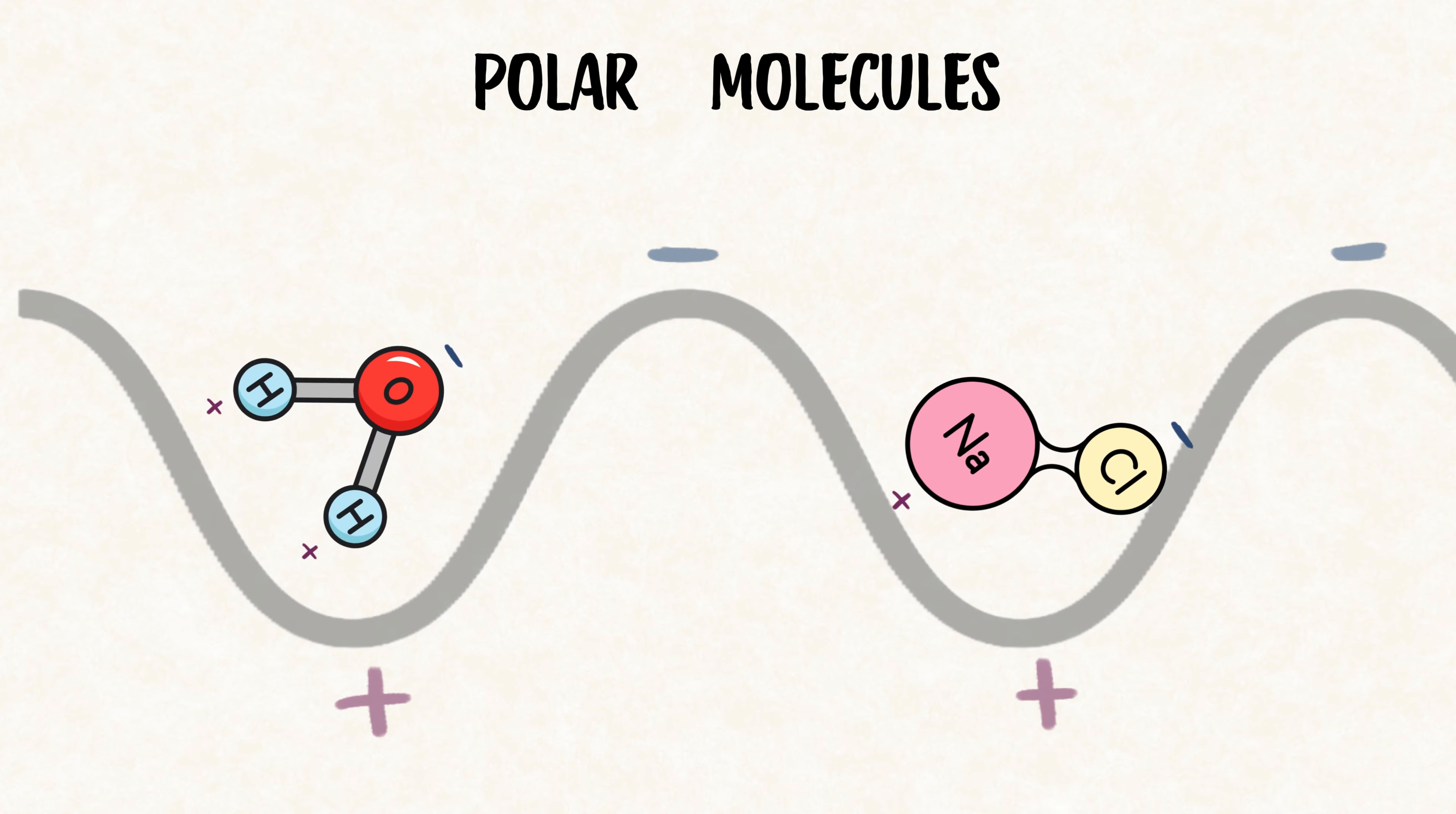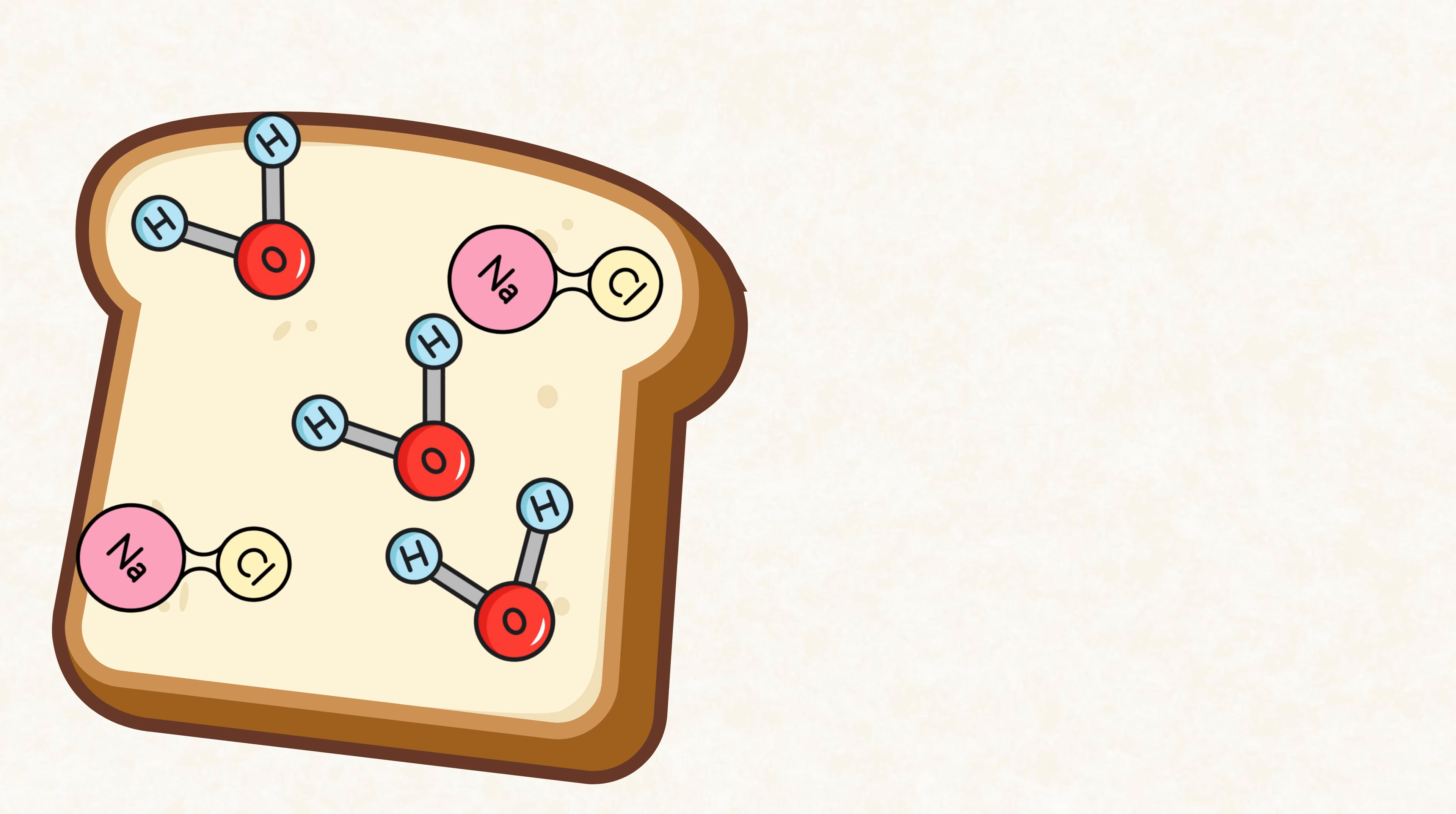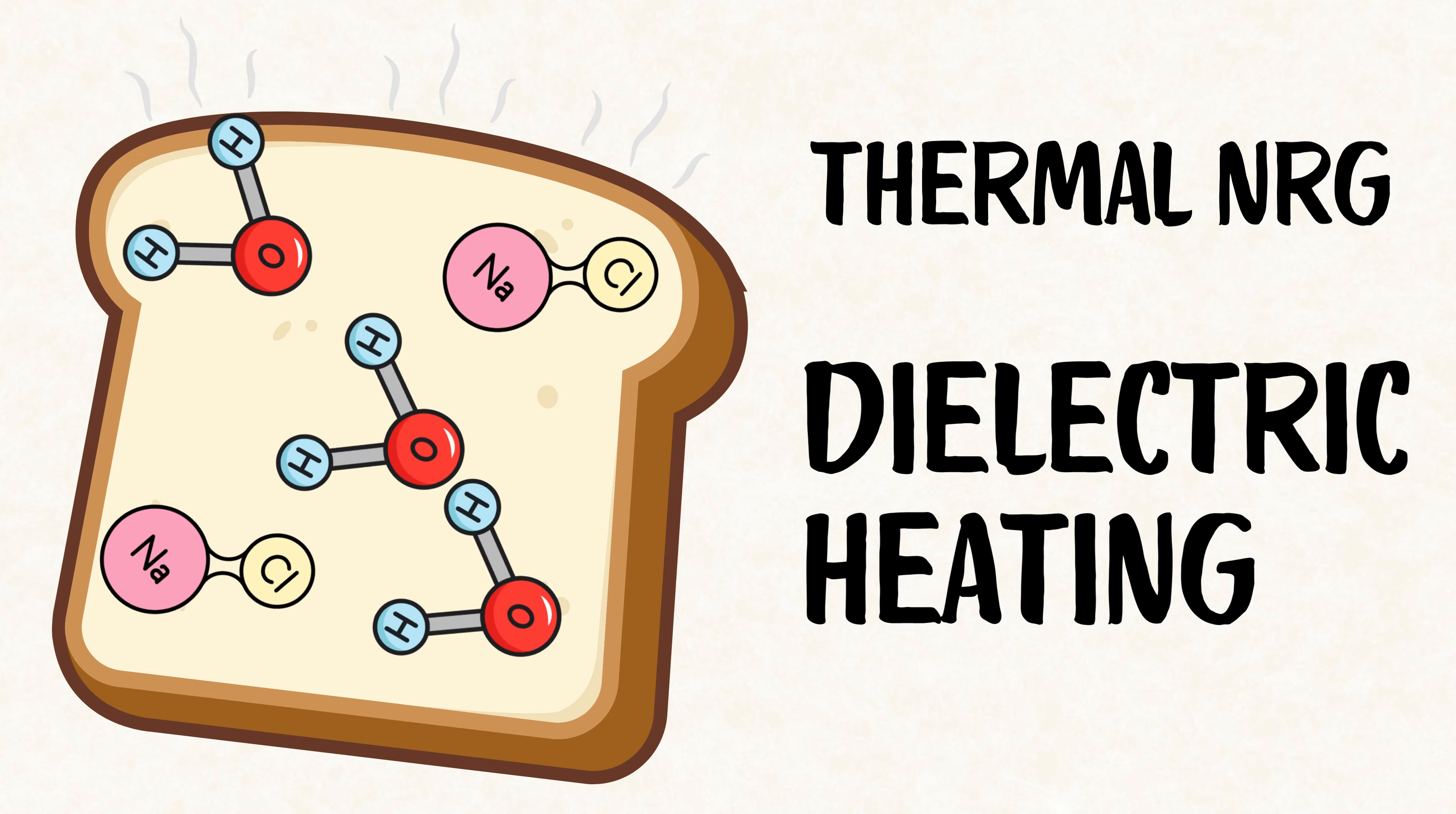They constantly align themselves with the magnetic field they're subjected to, so when they meet oscillating magnetic fields, they repeatedly rotate almost a billion times a second, a process called dipole rotation. Multiple molecules collide and create friction. The friction combined with the fast motion of molecules creates thermal energy heating our food, a form of dielectric heating.